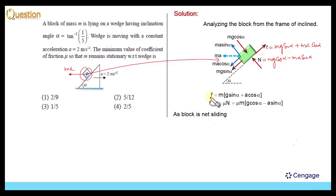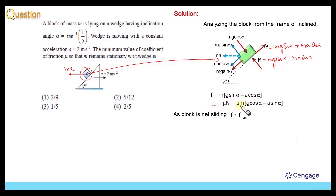Since the block is not sliding, it means the real friction force should be less than or equal to the maximum possible friction force. That means f ≤ f_max. And we know f = m(G sin α + A cos α) and f_max = μ · m(G cos α − A sin α). Here m and m will get cancelled.